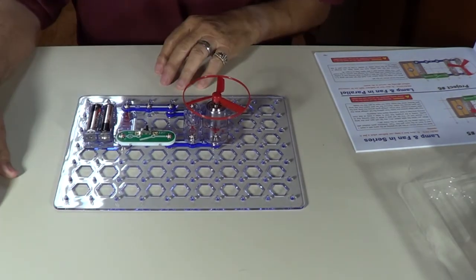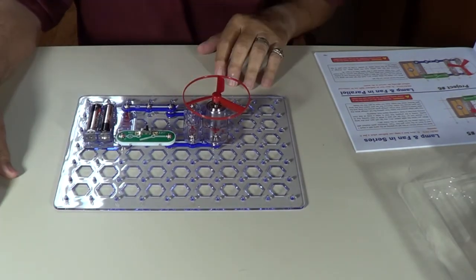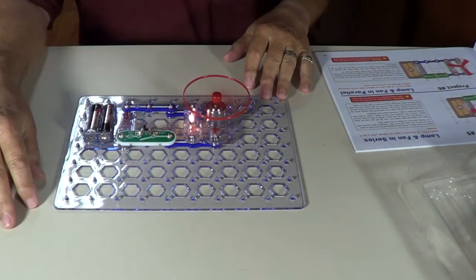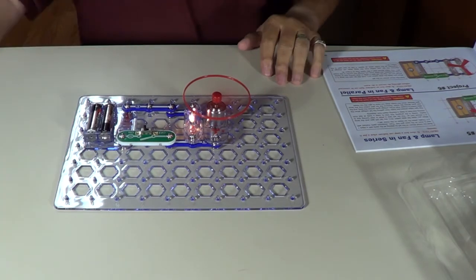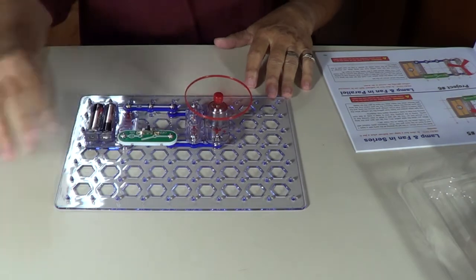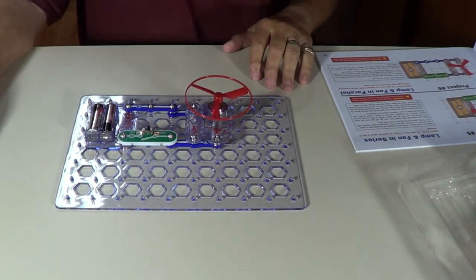And watch this one. The lamp's going to come on and it's going to run a little bit faster because it's parallel. It uses, it gets a little more voltage. There you go. All right, turn it off. We'll take it apart. Build number seven.